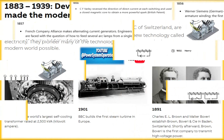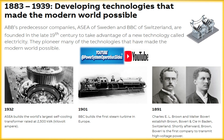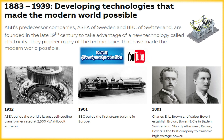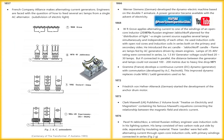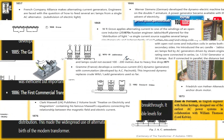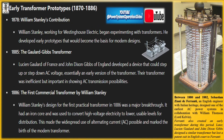The adoption of alternating current (AC) systems by Nikola Tesla and George Westinghouse in the late 19th century further accelerated the development and implementation of transformers. AC systems allowed for the easy transformation of voltage levels using transformers, which was a significant advantage over direct current (DC) systems advocated by Thomas Edison. The war of currents between AC and DC power systems ultimately concluded with the widespread adoption of AC systems, in large part due to the advantages offered by transformers.